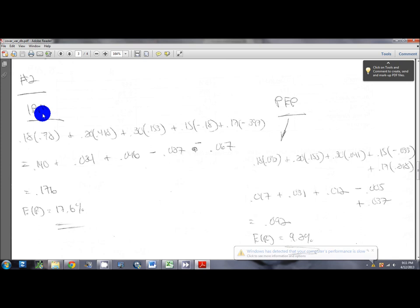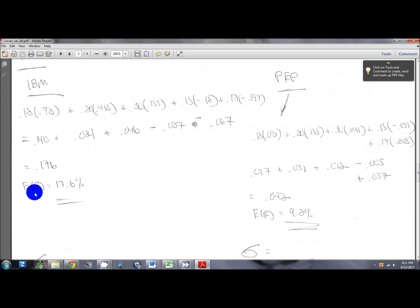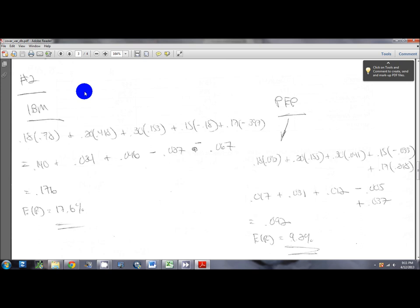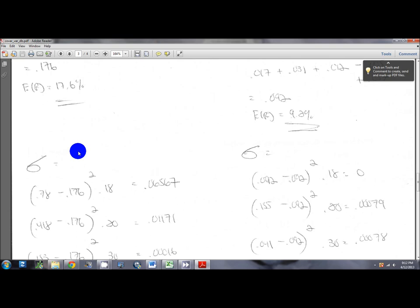This is number two from one of the homework assignments I sent through where you have IBM and Pepsi. This first sheet goes through how to do expected return and standard deviation calculations. This is something I expect you to already be able to do from 311 or 680. But I will briefly go through and talk through how I got these numbers for just one of the stocks. I'm not going to go through both simply in the interest of time.